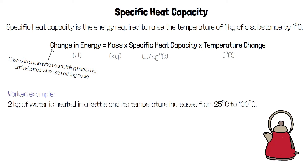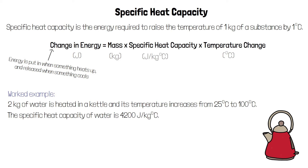For example, two kilograms of water is heated in a kettle and its temperature increases from 25 degrees to 100 degrees. The specific heat capacity of water is 4200 joules per kilogram per degree Celsius. Calculate the change in energy of the water.